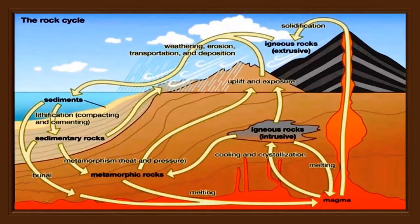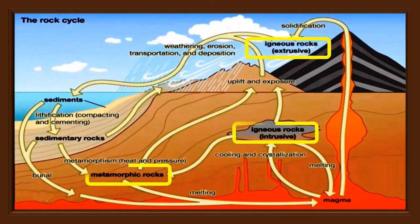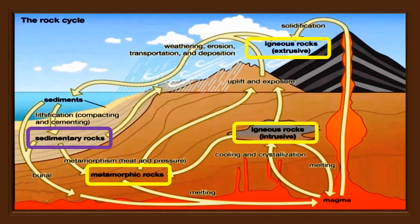This diagram of the rock cycle can be utilized to conclude that endogenic and exogenic processes are significant in the metamorphosis of rocks. Due to endogenic processes, igneous and metamorphic rocks are formed. On the other hand, the formation of sedimentary rocks is because of the exogenic processes.